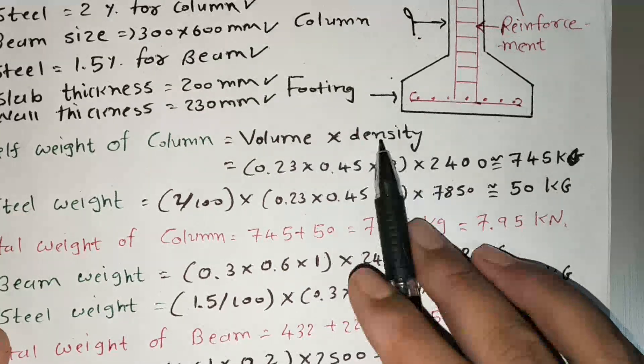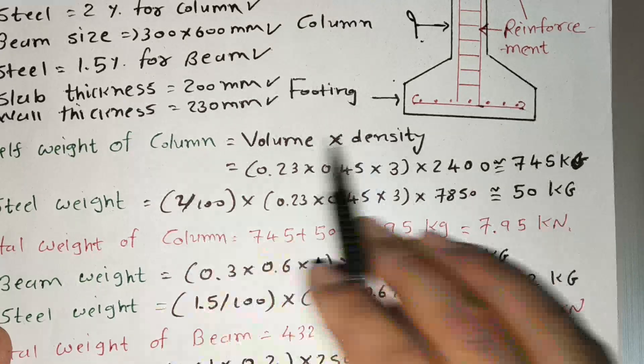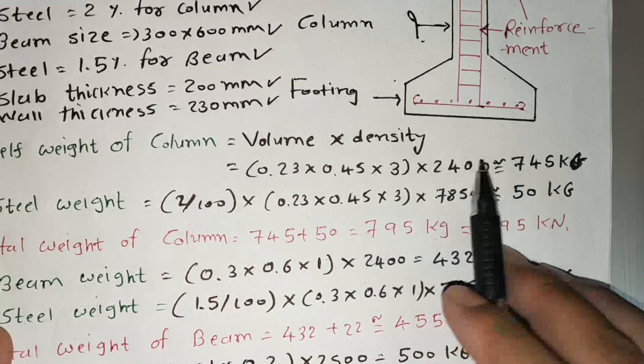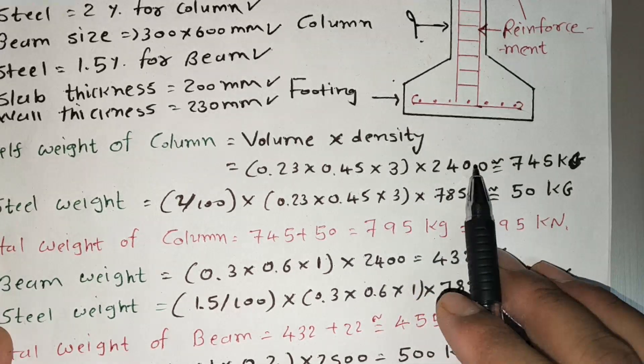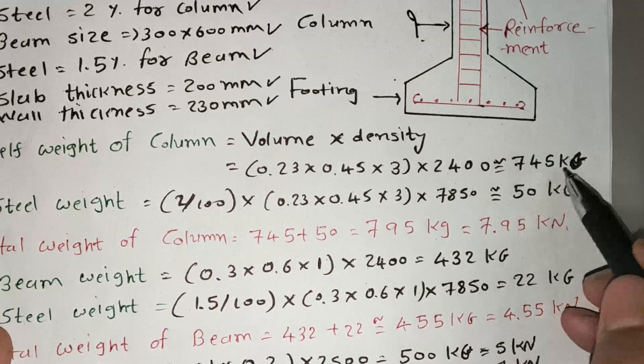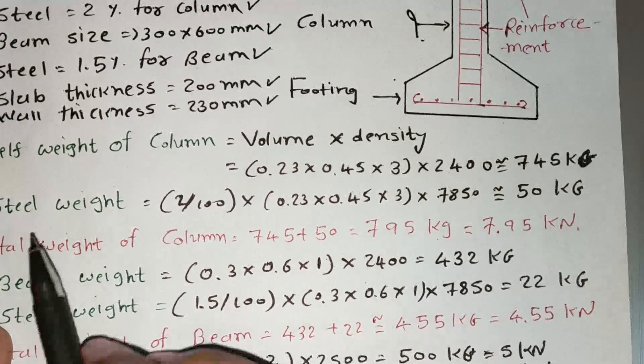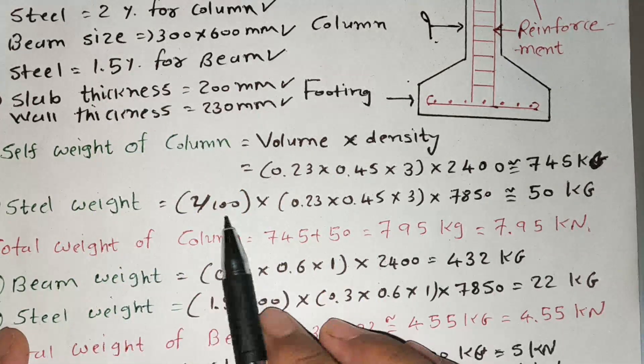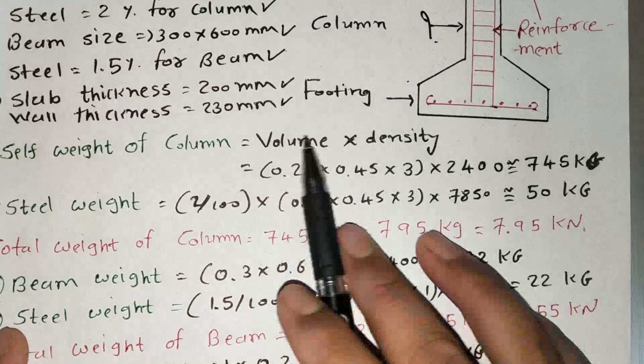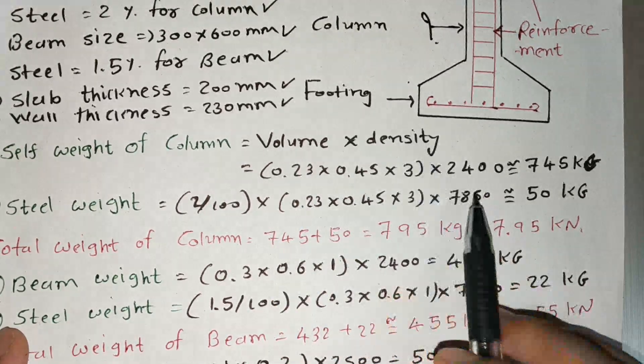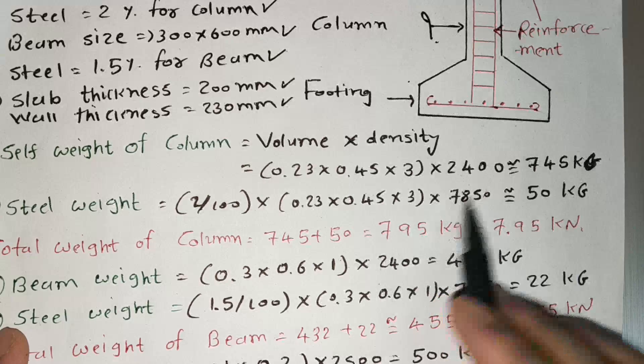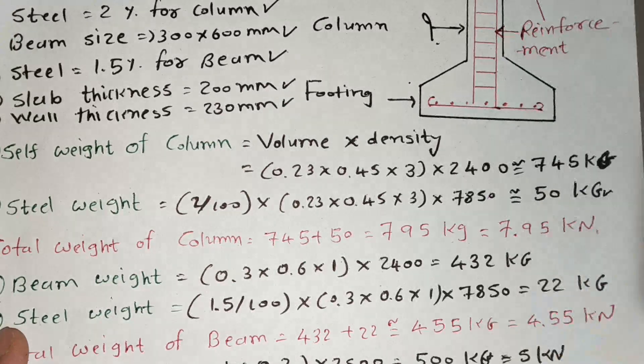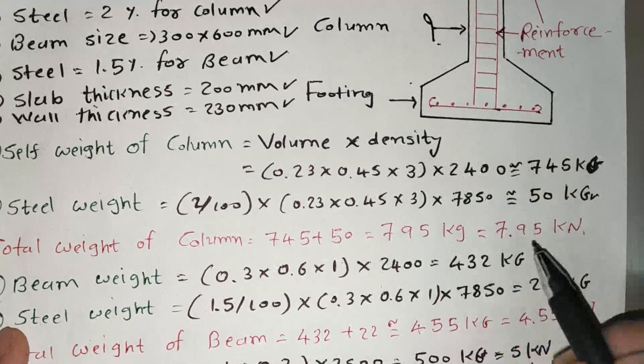And the density, here I used only column area, so I don't add reinforcement. So I use density is 2400 kN per meter cube. So this is 745 kg. And the steel weight in column, here steel is 2%. So 2 divided by 100, same way multiply the volume of the column and density of the steel is 7850. So I got 50 kg. If I do summation of the both, then I got 795 kg, almost 7.95 kN.